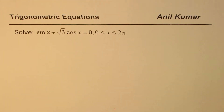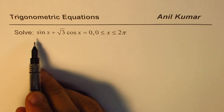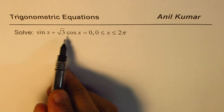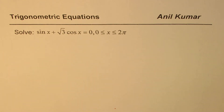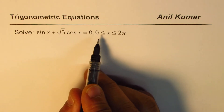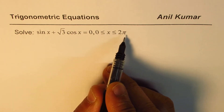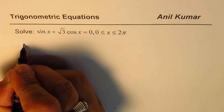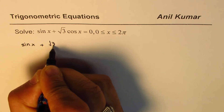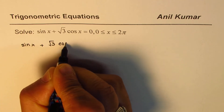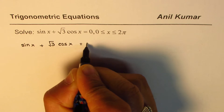I'm Anil Kumar. We are solving a trigonometric equation, and here is another interesting example. We need to solve sin x plus square root 3 cos x equals 0, where x is between 0 to 2 pi. That is to say, we have to provide all solutions in radians in the domain 0 to 2 pi. The equation for us is sin x plus square root 3 cos x equals 0.